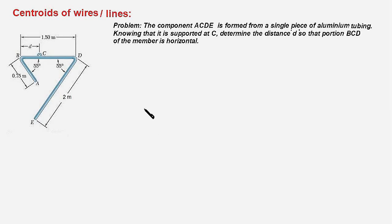Hello everyone, welcome back. Today I am going to solve a problem on centroids of wires or lines. In this problem, we have a component ABCDE which is made of a single piece of aluminum tubing, and we have to determine the length BC so that when this is suspended from point C, the segment BCD remains in horizontal position.